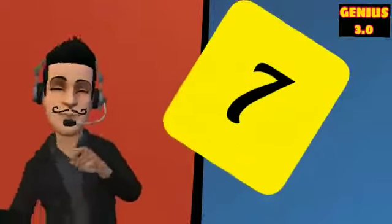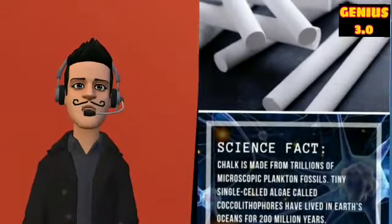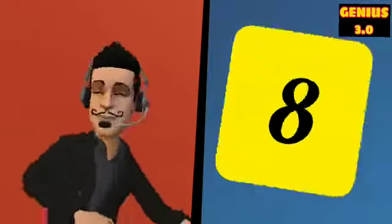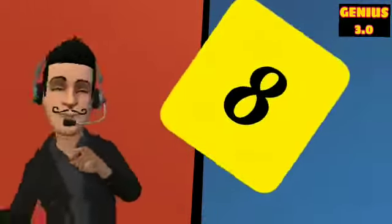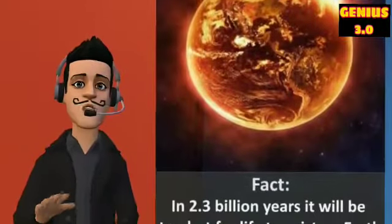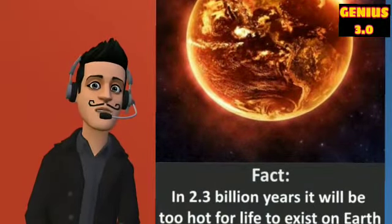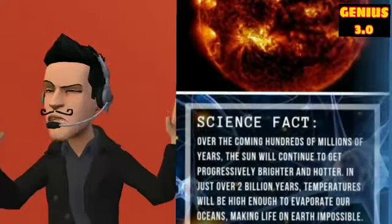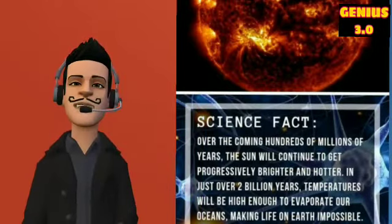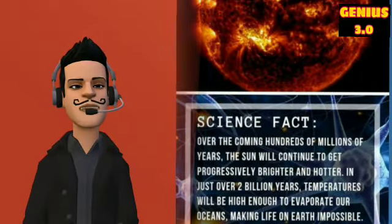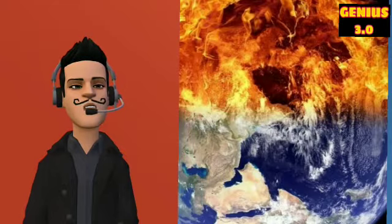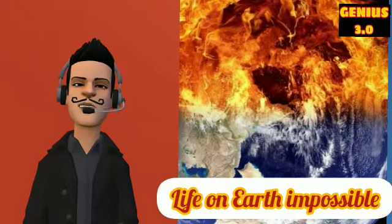The seventh interesting fact is chalk is made from trillions of microscopic plankton fossils. The eighth amazing fact is in 2.3 billion years it will be too hot for life to exist on Earth. Over the coming hundreds of millions of years, the sun will continue to get progressively brighter and hotter. In just over three billion years, temperatures will be high enough to evaporate our oceans, making life on Earth impossible.